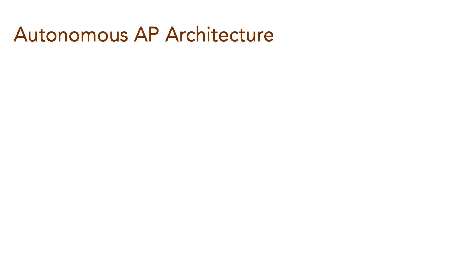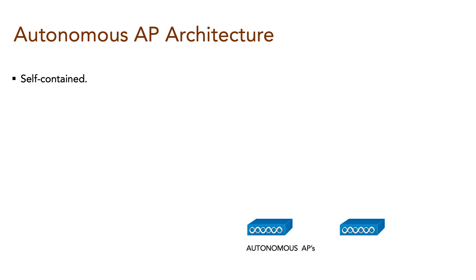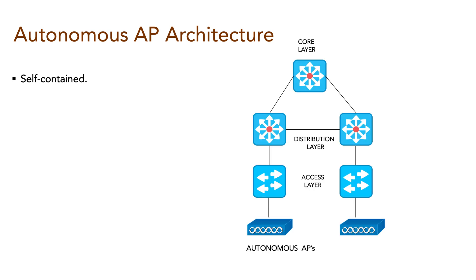An Autonomous AP is a self-contained device. It is a standalone management Cisco wireless access point architecture equipped with both wireless hardware and wired hardware to serve wireless clients and connect them to the wired network. The Autonomous AP can offer more than one standalone basic service set and connect SSIDs to VLANs.